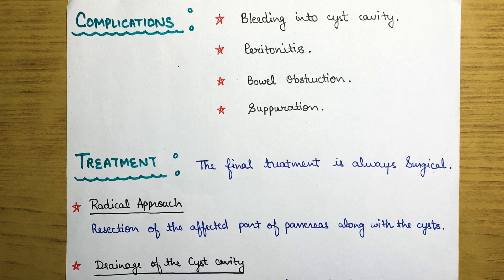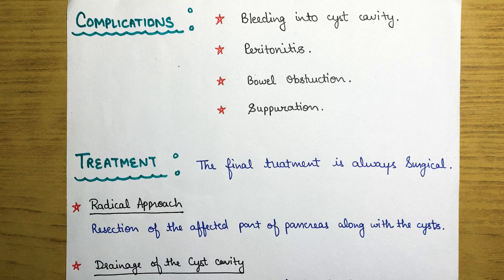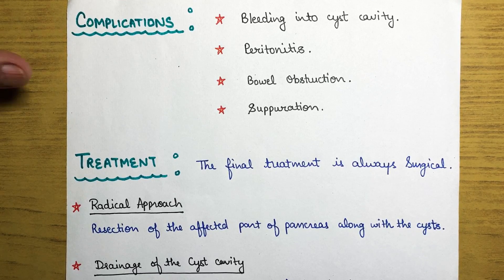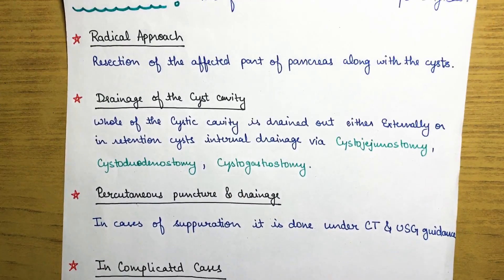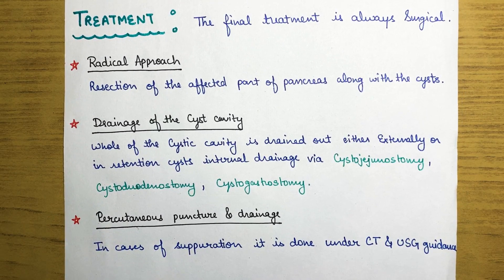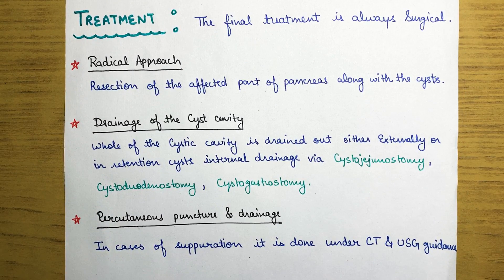In rare cases, pancreatic cysts can also cause suppuration. These four complications — bleeding, peritonitis, bowel obstruction, and suppuration — are serious life-threatening issues that must be monitored. The final treatment is always surgical, as medication alone will not resolve the cysts.